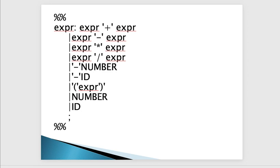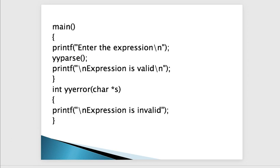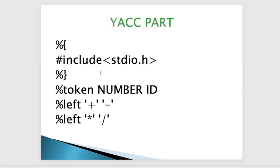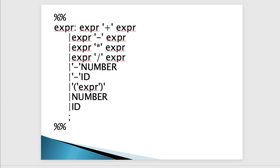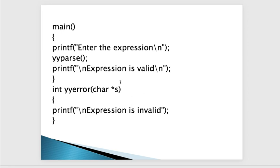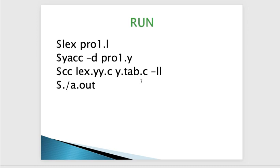The main method is where the program starts. It prompts you to enter the expression, then calls yy_parse, which initiates the yacc program. It picks up the number tokens from the lex file, checks them against the grammar, and if valid it prints valid; if not valid, it prints not valid.